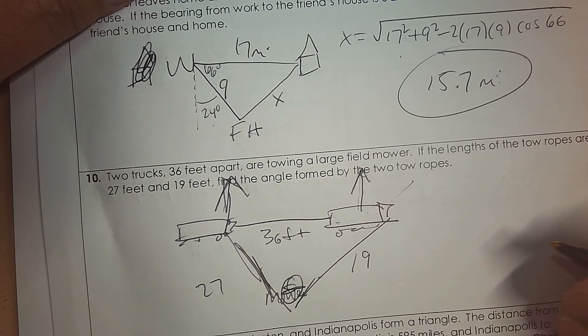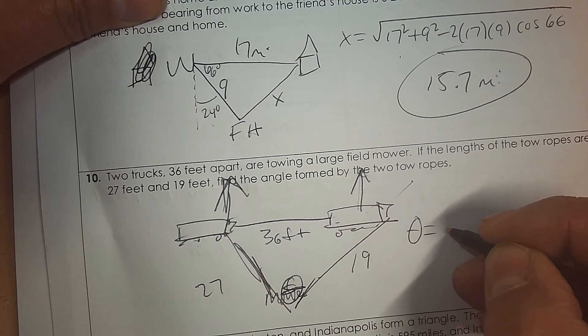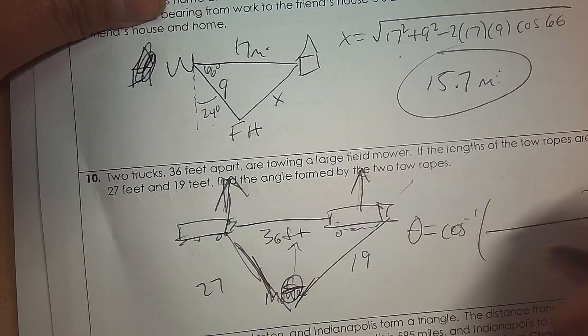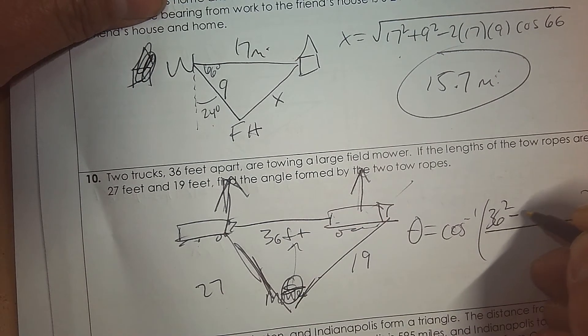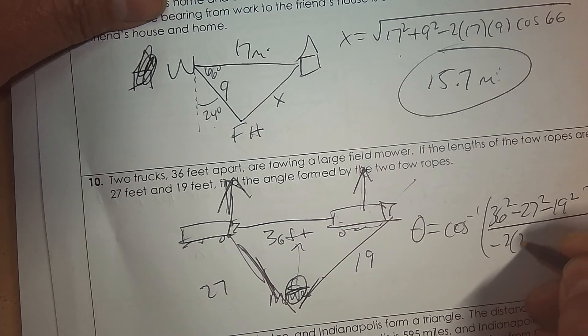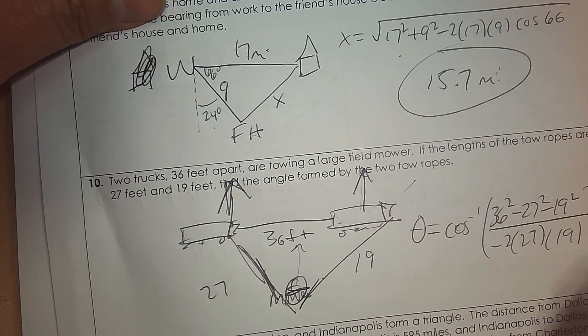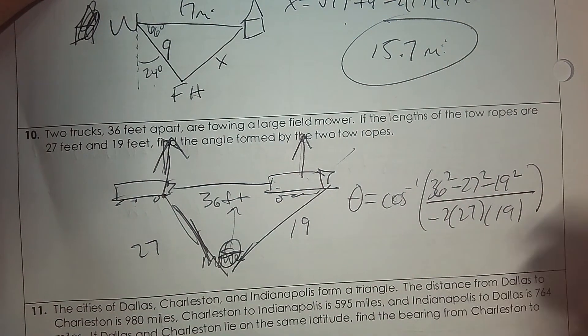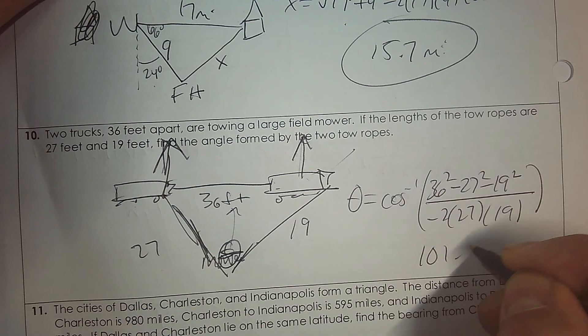So to find that angle, it's inverse cosine. The side opposite of that angle is 36. Use it once. Now, order doesn't matter. That's why it didn't really matter where 27 or 19 went. And then plug in for the rest of the formula. And the angle you find. Anyways, press pause. Then press play. And the angle is 101.6 degrees.